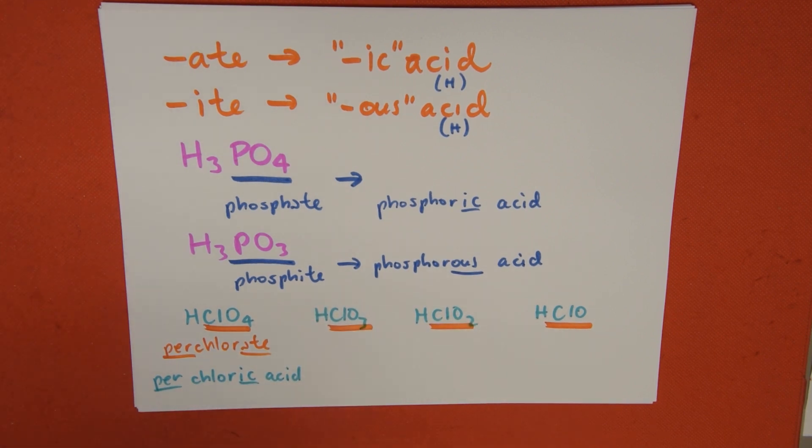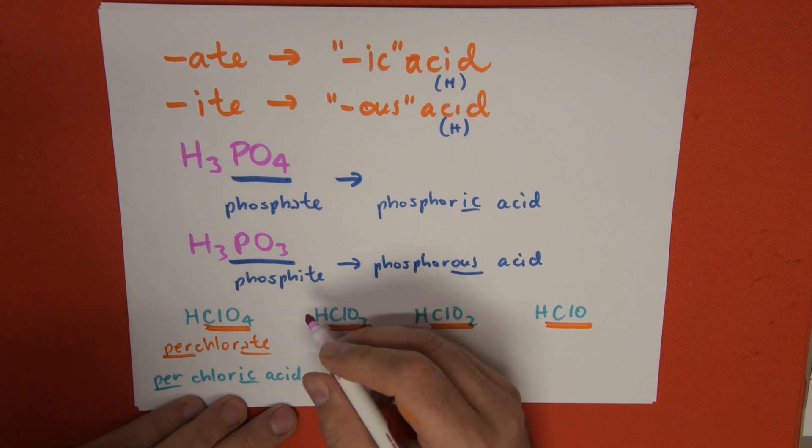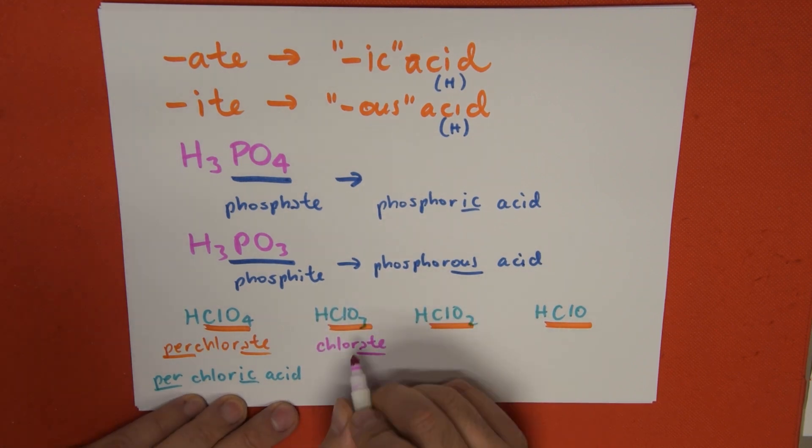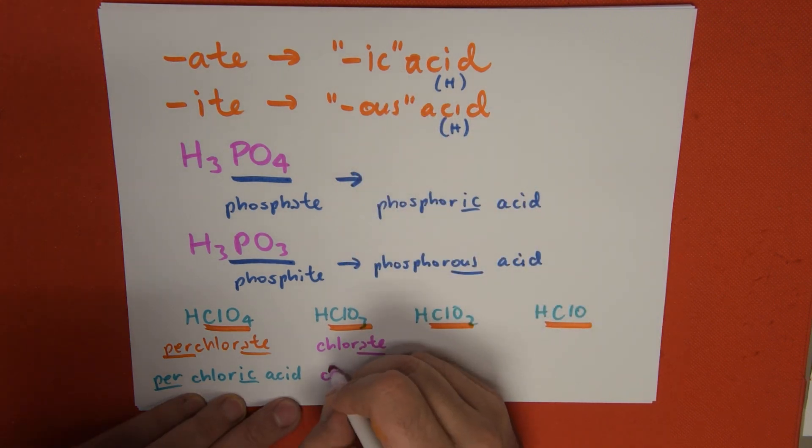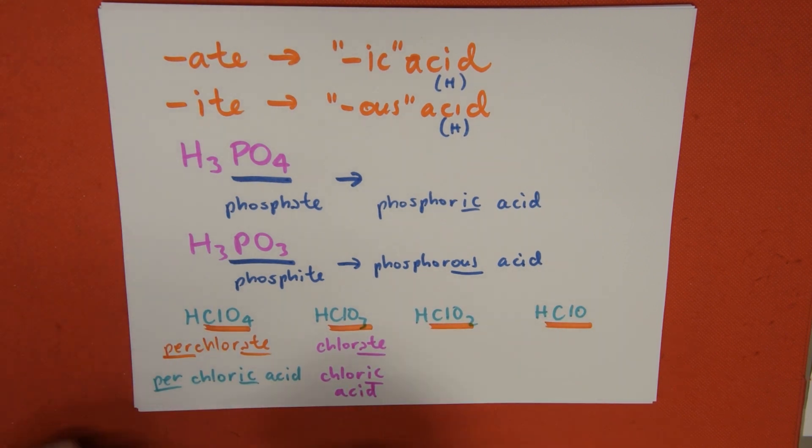The name of this anion is going to be chlorate. Since it's -ate, we do the -ic ending, and this is going to be called chloric acid.